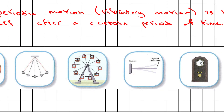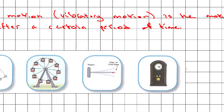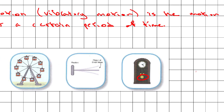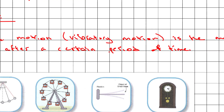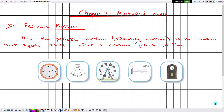Similarly, a Ferris wheel is periodic: a cabin starting from point A completes one revolution and returns to point A after a certain period. The same applies to a rod fixed at one end — if you vibrate it, it undergoes vibratory motion, moving from A to B and back to A. All of these are examples of periodic motion: any motion that repeats itself after a certain period of time. We are now interested in calculating the period.